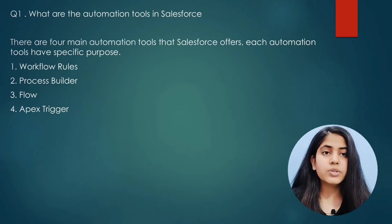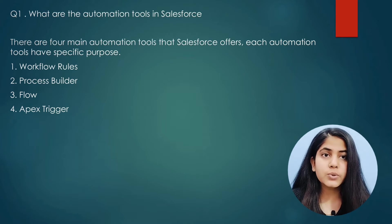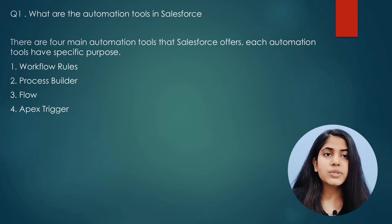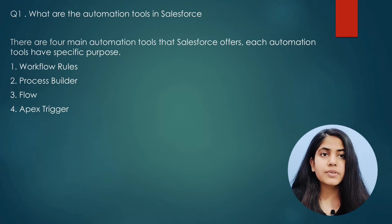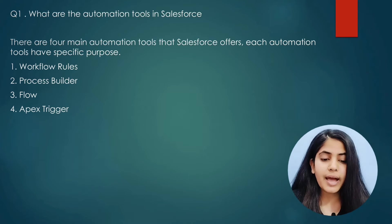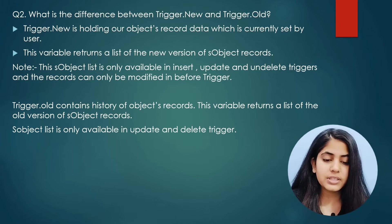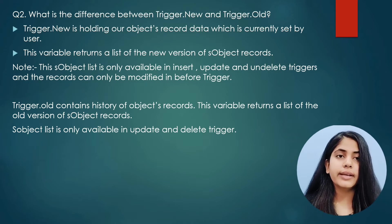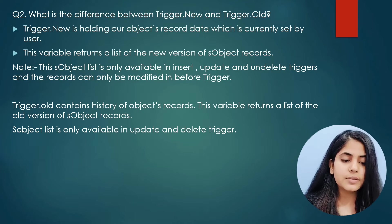The first question was: what are the automation tools in Salesforce? There are four types of automation tools in Salesforce. The first one is Workflow, then we have Process Builder, then we have Flows, and then we have Apex Triggers.